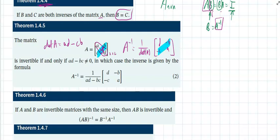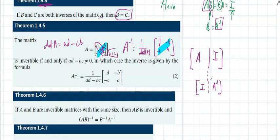There's another way to find an inverse: write matrix A next to the identity, perform row operations, and when you get the identity on the left, whatever remains on the right is the inverse. That's more work. This 2×2 shortcut only works for 2×2 matrices; for 3×3 and beyond, we'll use the longer method in the next sections.